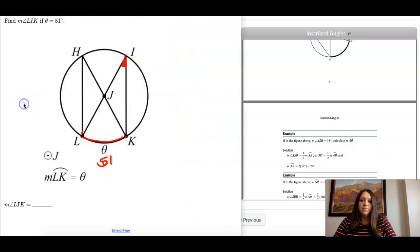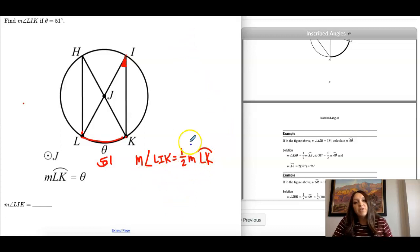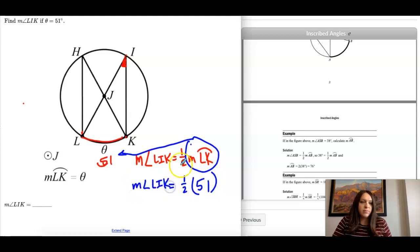So the angle, I'm looking at the solution over here. So here they have the measure of ASB. I have the measure of angle LIK equals one half the measure of arc LK, which we write like that. So I know the measure of this arc is 51. So I want to take one half of 51 to get the measure of my angle. So half of 51 is 25.5. So that's what this angle would be, and that's what that angle would be. 25.5.